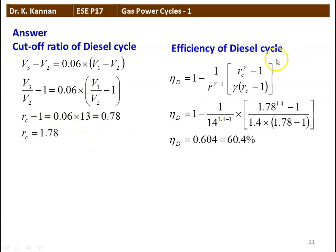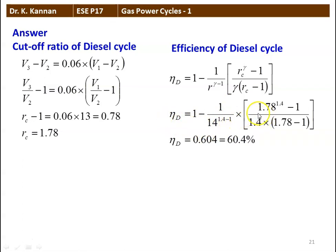We calculate the efficiency of the diesel cycle: eta equals 1 minus 1 by R to the power gamma minus 1, multiplied by RC to the power gamma minus 1, divided by gamma into RC minus 1. With gamma equal to 1.4 and substituting R equals 14 and RC equals 1.78, the efficiency of the diesel cycle is 0.604, which is 60.4 percent. That is the answer.